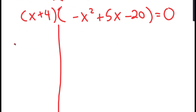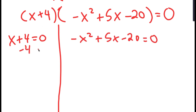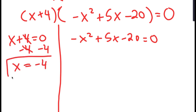So I get two equations from this: x plus 4 equals 0, and negative x squared plus 5x minus 20 equals 0. For x plus 4 equals 0, all we have to do is subtract 4 on both sides, and we get x is equal to negative 4.